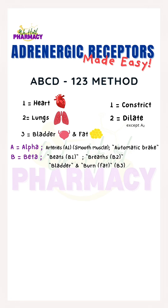We have learned last time about the adrenergic receptors using the ABCD-1-2-3 method. A stands for alpha receptors, B stands for beta receptors, and the numbers 1, 2, and 3 will help us remember where and how they act.